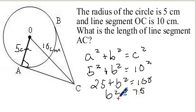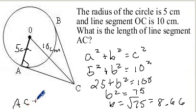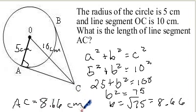So if we know what B squared is, we can find the square root of that. And it's rounded off to 8.66. So line segment AC is equal to 8.66 centimeters.